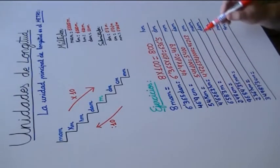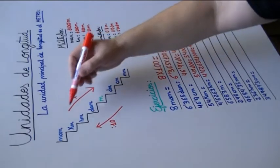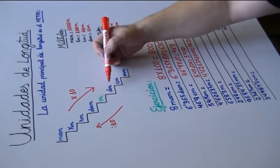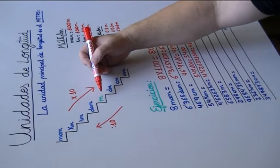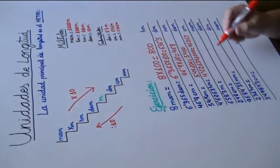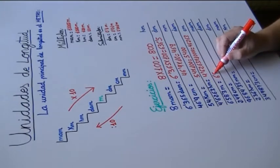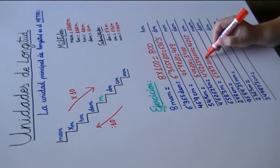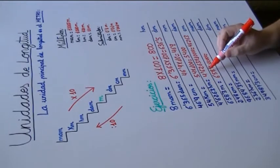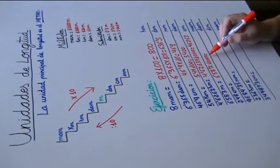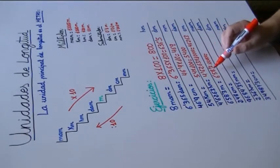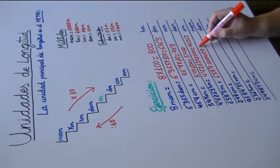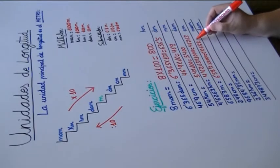658,3 metros a miriámetros. Ahora tenemos que subir la escalera, con lo cual tenemos que dividir. De metros a miriámetros, los escalones que tenemos que subir son 1, 2, 3 y 4. Pues 658,3 dividido entre 10.000. Desplazamos la coma hacia la izquierda tantas cifras como ceros acompañen a la unidad: cuatro cifras. Completamos con un cero: 0,06583.